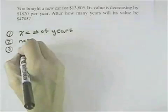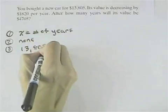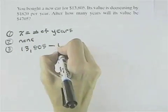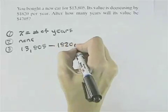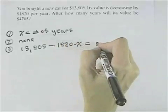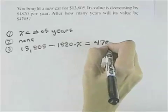It says that we bought a new car for $13,805, and decreasing means minus. It's decreasing by $1,820 per year, where we said X is the number of years. We want to know when will that value be equal to $4,705.